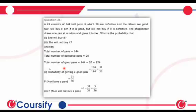Okay, therefore total number of good pens kitne hoonge? 144 minus 20. That is 124.